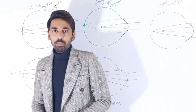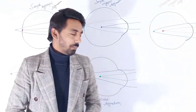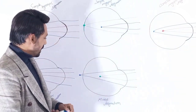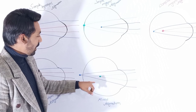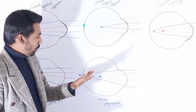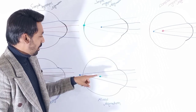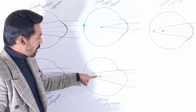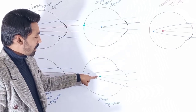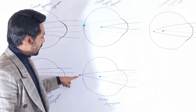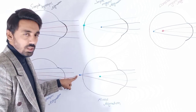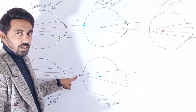Now we will discuss about mixed astigmatism. In mixed astigmatism, you can see that there are two focal points: the first one is focused in front of the retina and the second one is focused behind the retina.